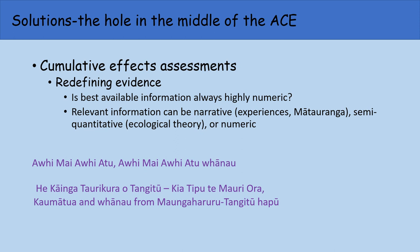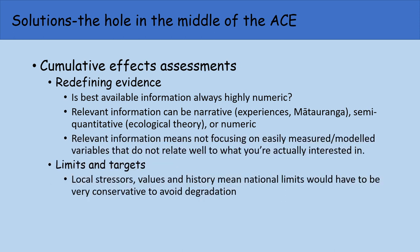There are two important points I'd like to make here. We can make a lot of headway by reframing what is thought of as evidence. Do we actually have as little data as we think? That's certainly true if we think of information as needing to be highly numeric. But relevant information can be so much more than that — there have been many presentations on day two demonstrating the use of mātauranga and local knowledge. Relevant information can be narrative, experiences, mātauranga; it can be semi-quantitative, ecological theory, expert opinions; or it can be numeric. It's also important to realise that relevant information is not always easily measured or modelled.